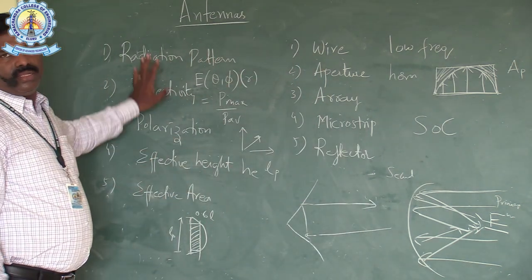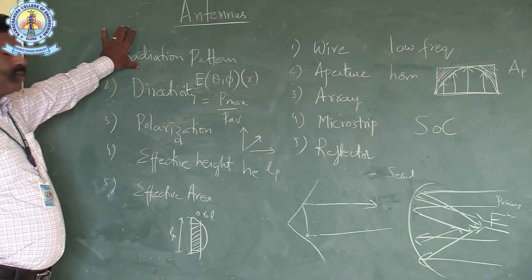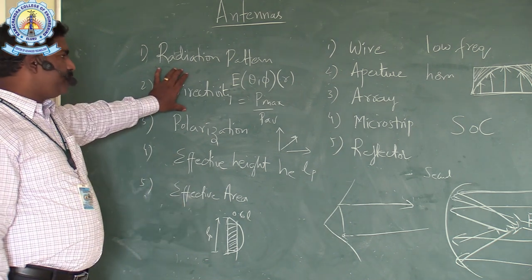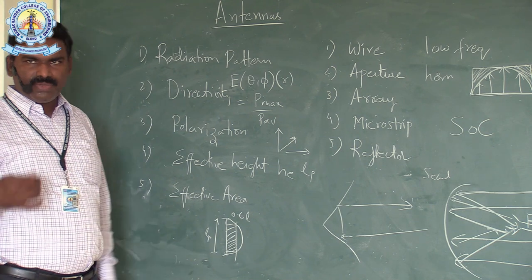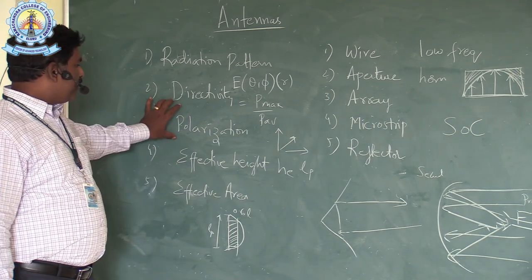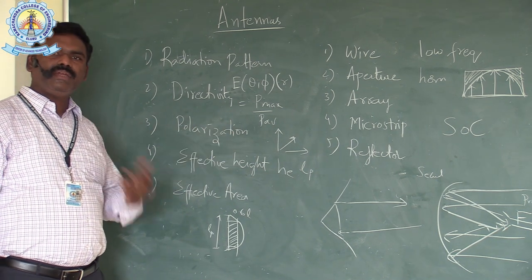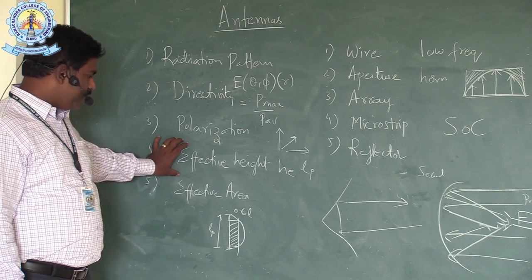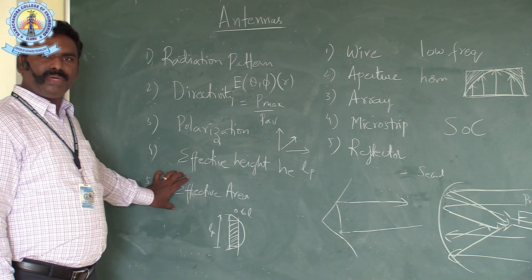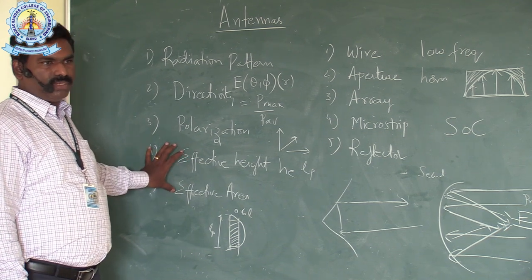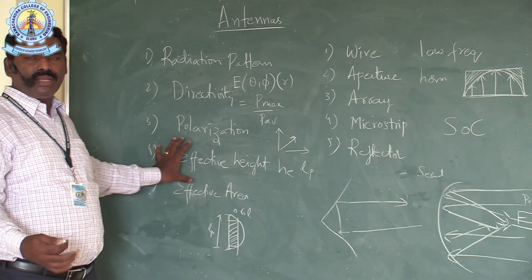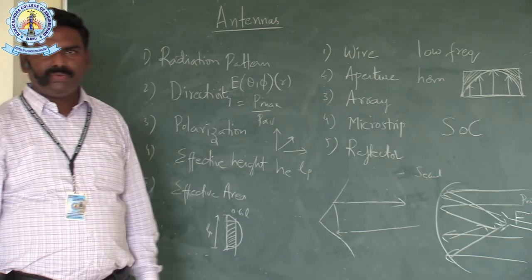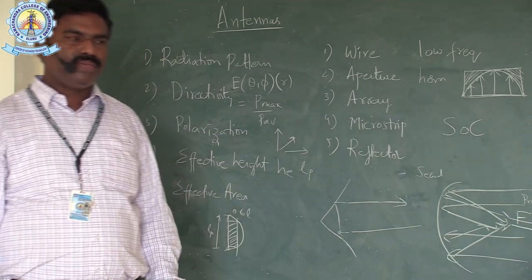To summarize, the important parameters of an antenna are: radiation pattern, which determines in which direction the antenna is radiating; directivity, for long-distance communication requiring highly directive antennas; polarization, which gives the orientation of the electric field vector; and effective height and effective area, which indicate how much the antenna is effectively radiating or receiving. These are the basic things we learn in antennas. Thank you.